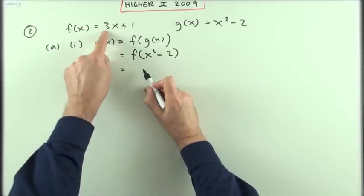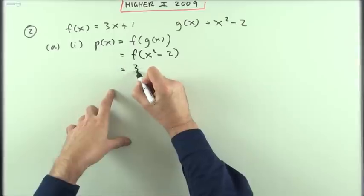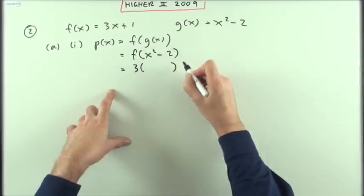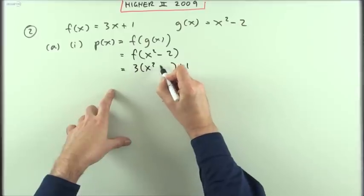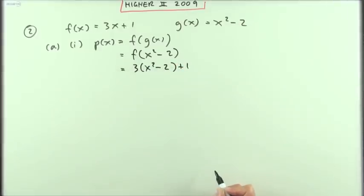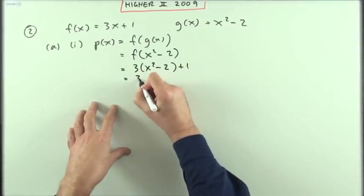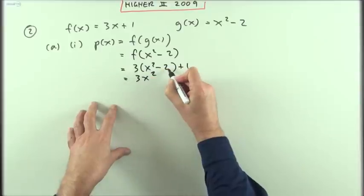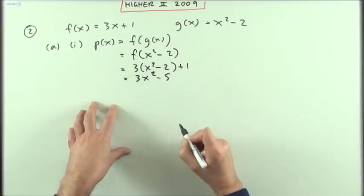It'll do three times the content, so three times the bracket plus one. That was x squared minus two that you fed into it, so it's going to produce 3x squared minus 6 plus 1, which equals 3x squared minus 5.